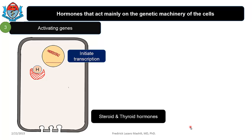Now that we have explored the second messengers, let's talk about hormones that act mainly on the genetic machinery of the cell. These hormones activate genes — you have a hormone-receptor complex, initiate transcription, changes in protein, and eventually changes in biological response. The key examples here are steroids and thyroid hormones, and we will get into the details of this later.